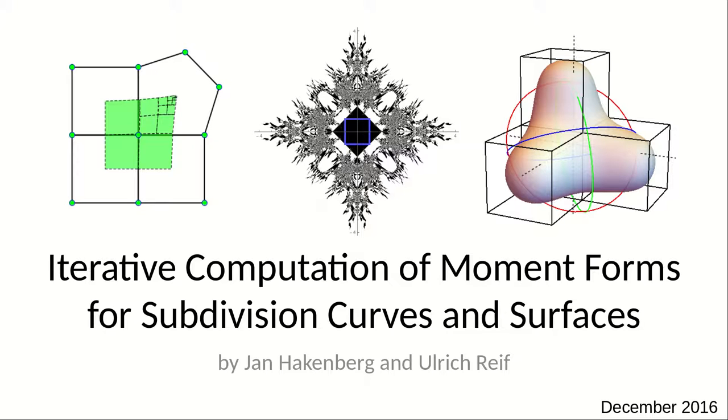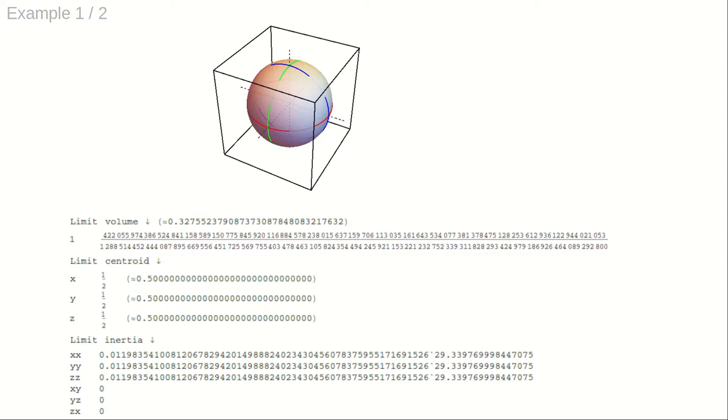In this video, we present two iterative methods to compute moment forms for subdivision curves and surfaces. Using our new approach, we compute centroid and inertia defined by sets bounded by Catmull-Clarke limit surfaces with unprecedented accuracy.